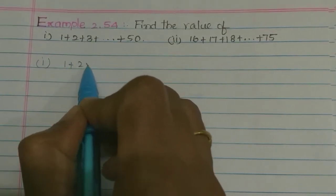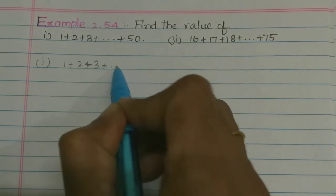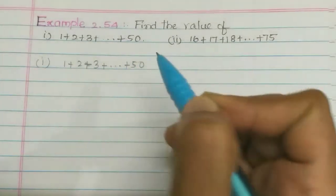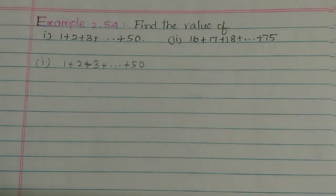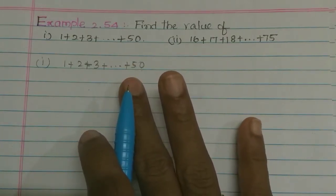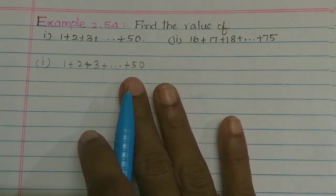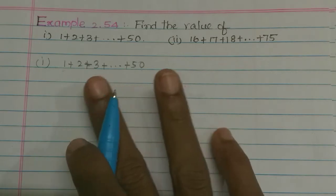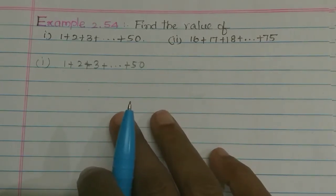So 1 plus 2 plus 3 plus etc up to 50 — this is the value if you add 1 to 50. So this is normal; you can think about AP or GP. But first, when we study special series, if you check this series, you can check it as an AP.